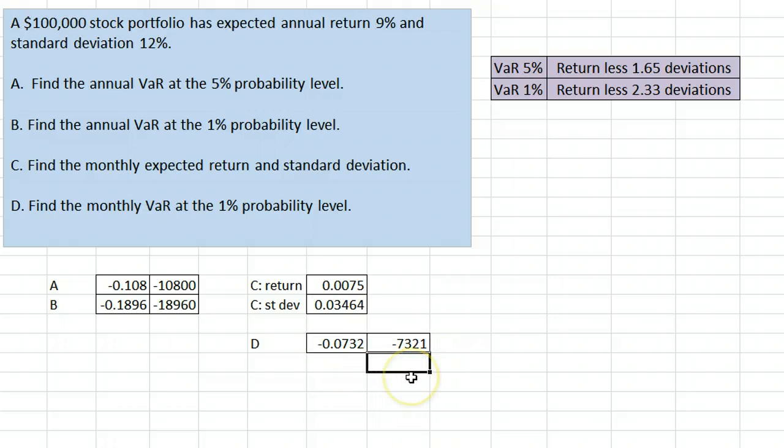In other words, in 1% of the months we are invested, we can expect to lose at least 7% or $7,300.